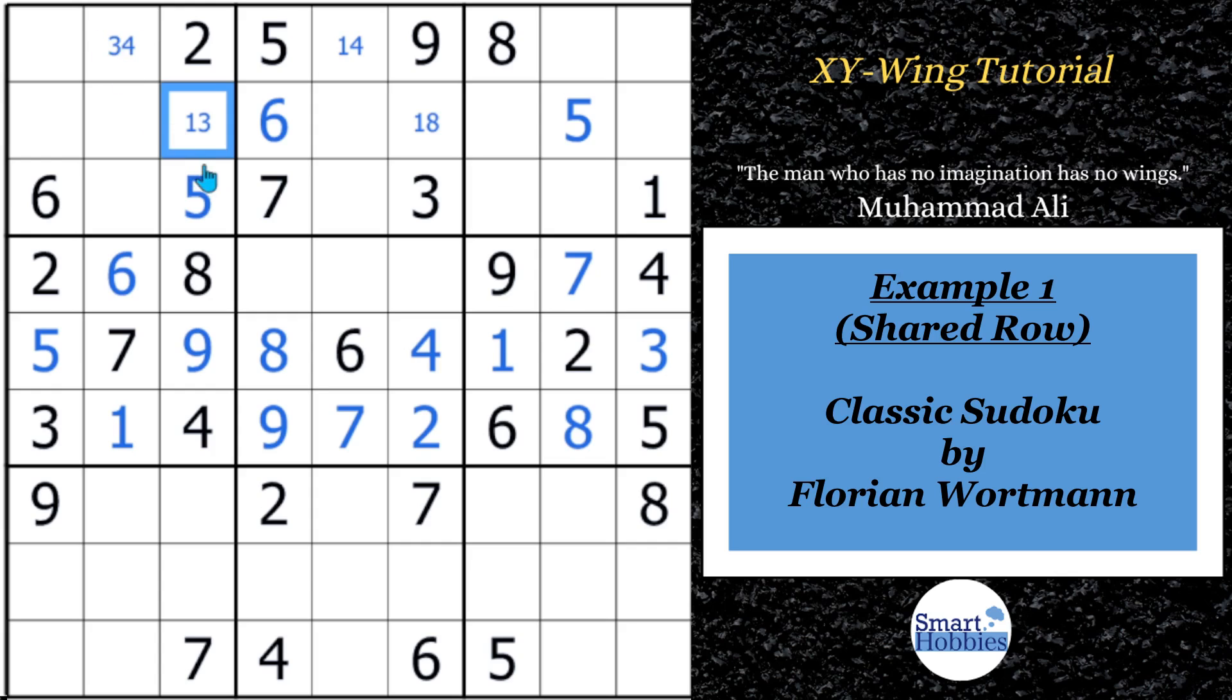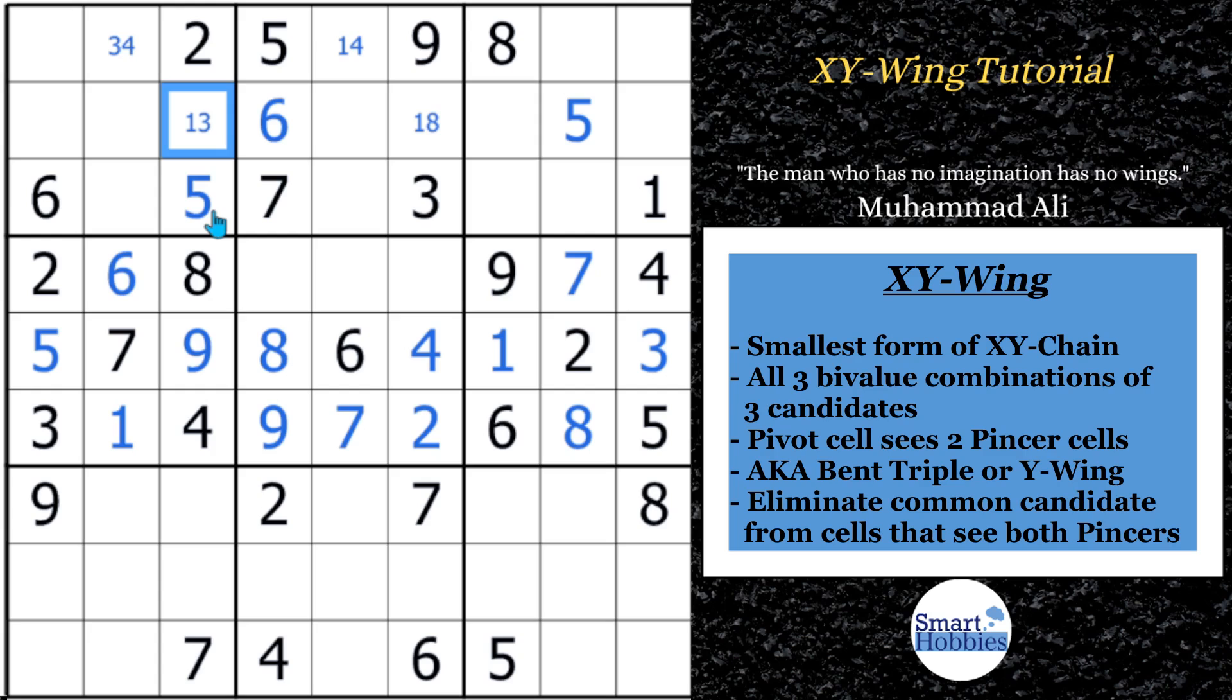Once you get and see all of these cells, you come across what's called a Sudoku XY-Wing. First we're going to highlight the middle cell, and then these two cells, and I'll explain exactly what we're talking about. So an XY-Wing, it's the smallest form of an XY chain. A chain is made up of all bi-valued cells that are linked together with common candidates. The smallest form can be of three cells.